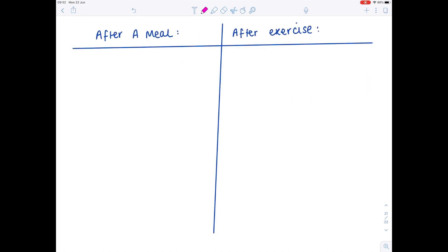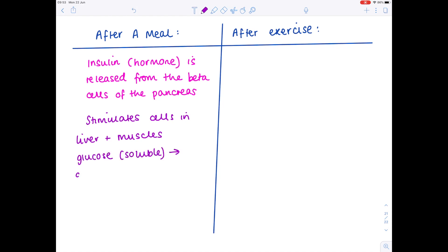So after a meal clearly our blood sugar levels are going to be high so we need to reduce that and that's carried out by a hormone called insulin. So insulin which is a hormone is released and you have to be nice and detailed here from the beta cells of the pancreas. So what does that insulin cause to happen? Well it stimulates cells in the liver and muscles to convert soluble glucose into insoluble glycogen. So the final effect is that blood glucose levels are lowered.